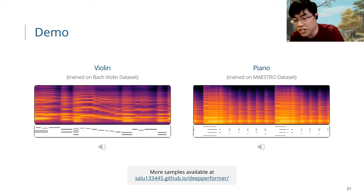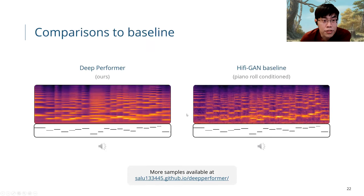You can hear that there are clear polyphonic structure and also the harmonic structure. We also compare our performance to a baseline, a HiFi-GAN baseline, which we just simply conditioned the HiFi-GAN model with piano roll input.